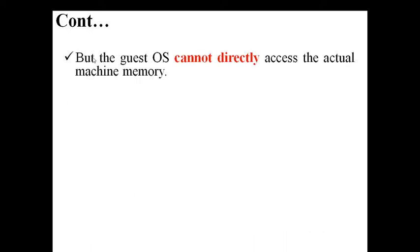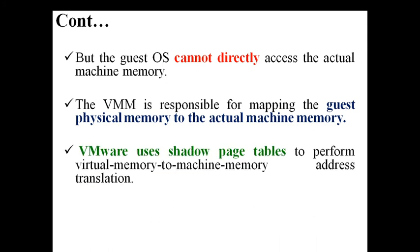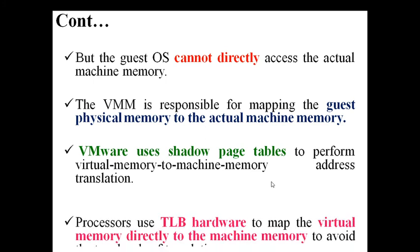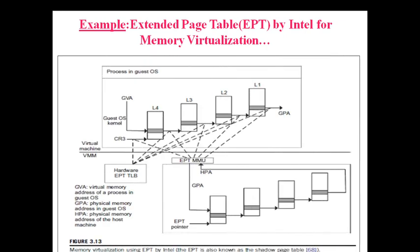The guest OS cannot directly access actual machine memory. The VMM is responsible for mapping the guest physical address to the actual machine memory. Instead of the OS alone, the VMM takes care of this two-way conversion using page tables. The VMM uses shadow page tables to perform virtual machine memory to machine memory address translation using the Translation Lookaside Buffer (TLB) concept. Virtual machines use a virtual address, which is stored at physical memory as a physical address, and that must finally be converted to a machine memory address the computer can locate and access.